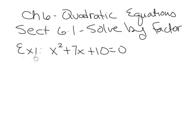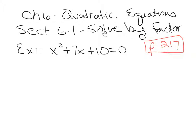Example 1 is found on page 217 of your textbook. It says solve by factoring: x squared plus 7x plus 10 equals 0. We're actually going to cover four different ways to solve quadratic equations. The first way is solving by factoring, so you need to make sure you follow the directions for each type of homework question. If the directions say solve by factoring, you definitely need to use factoring. The first step when you're solving by factoring is to make sure your equation equals 0. The importance of this is based on the zero product property.